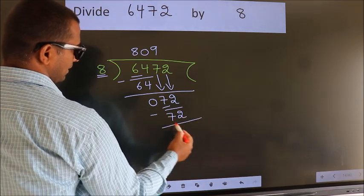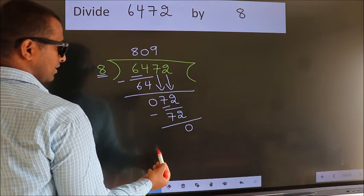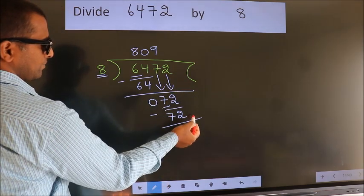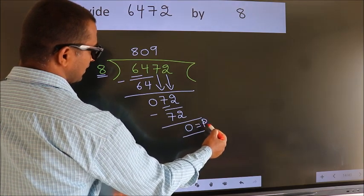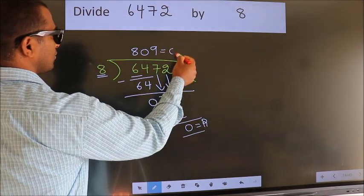Now, we subtract. We get 0. No more numbers to bring down. So, we stop here. This is our remainder. This is our quotient.